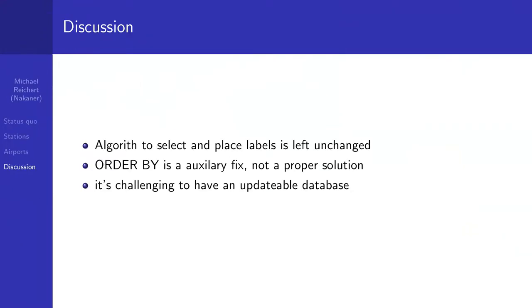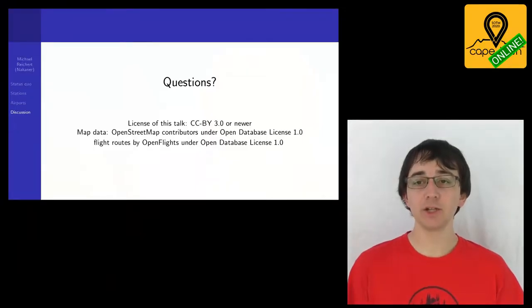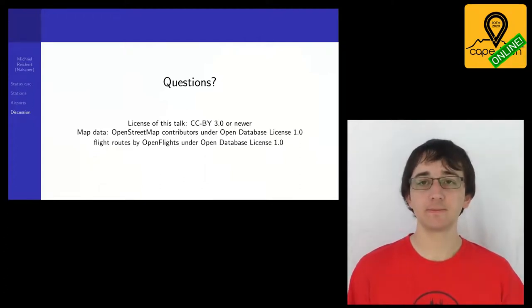This talk does not address whether label placement algorithms are good enough — it only covers calculating importance, leaving label placement to the rendering engine. The ORDER BY clause in SQL queries is an auxiliary fix and not a proper solution. To make really good maps, you also have to consider leaving gaps between features rather than just placing labels in reverse order of importance until the map is full. It is also challenging with some solutions to maintain an updatable database. Thank you for your attention.